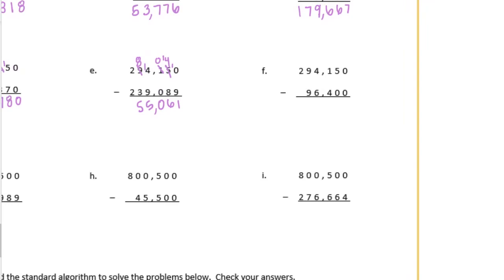F. 0 minus 0 is 0. 5 minus 0 is 5. 1 minus 4 we need to borrow. 11 minus 4 is 7. 3 minus 6 — we need to borrow. 13 minus 6 is 7. 8 minus 9 — we need to borrow. 18 minus 9 is 9. And 1 minus nothing is 1. 197,750.